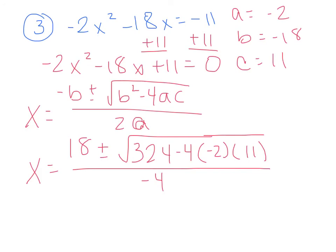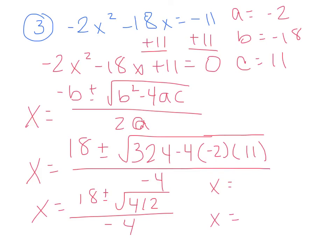Now do just the discriminant: plug in 324 minus 4 times negative 2 times 11, and you get x equals 18 plus or minus the square root of 412 all over negative 4. We're going to get two answers. The first: 18 plus the square root of 412 divided by negative 4 gives negative 9.57. The second: 18 minus the square root of 412 divided by negative 4 gives 0.57. Make sure you have all that written down. We'll see you tomorrow.